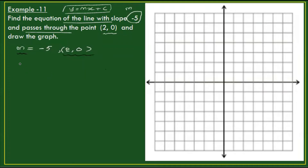We can also use the point-slope formula: y minus y1 equals m times x minus x1. That gives us the equation in terms of x and y.